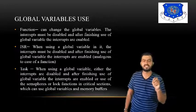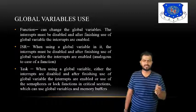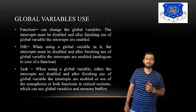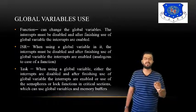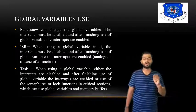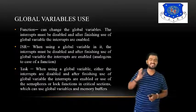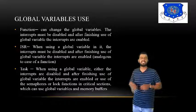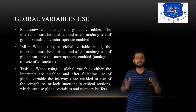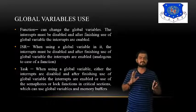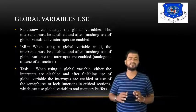For an ISR using a global variable, interrupts must be disabled while using it and re-enabled after. For a task using a global variable, either interrupts are disabled and re-enabled after use, or semaphores and lock functions are used in critical sections. Semaphores provide synchronization of tasks — if the OS has multiple tasks, they are managed with semaphores, which play a main role in providing different types of operations.